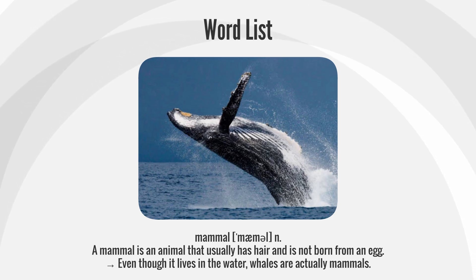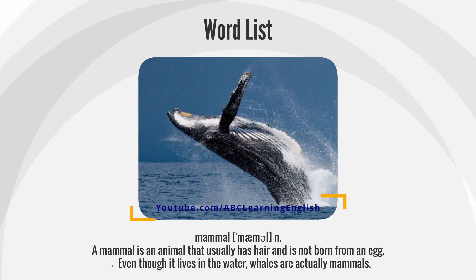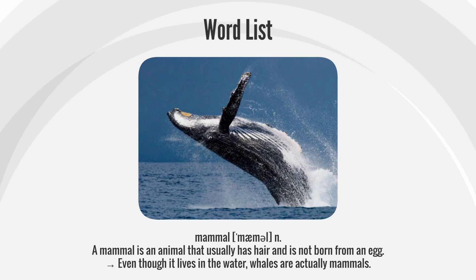Mammal. A mammal is an animal that usually has hair and is not born from an egg. Even though it lives in the water, whales are actually mammals.